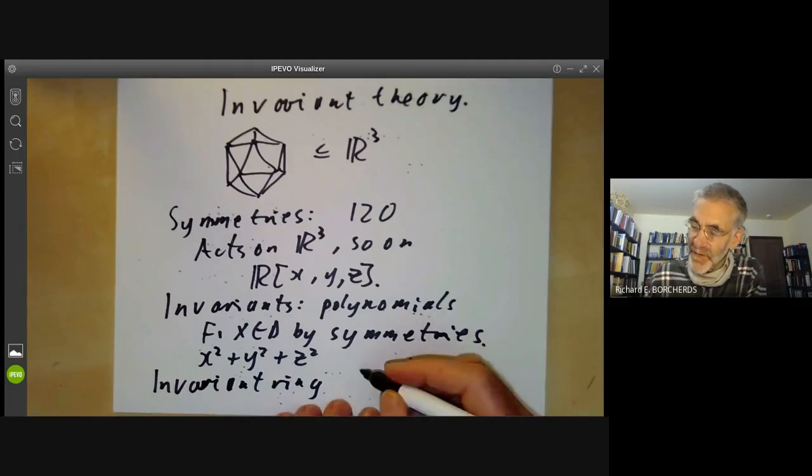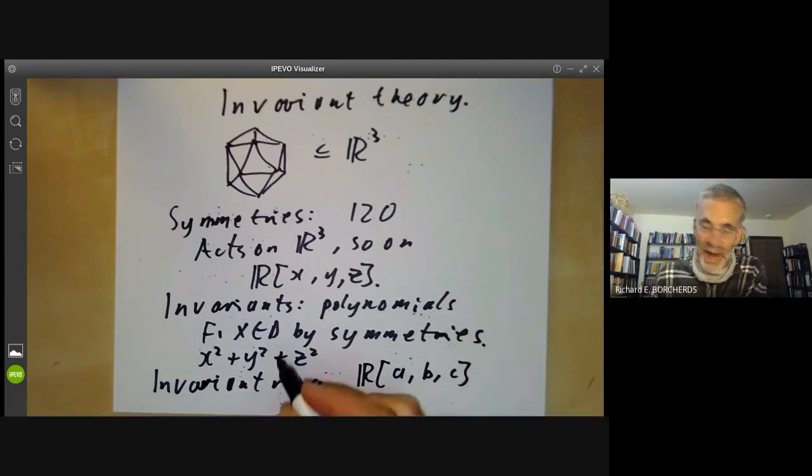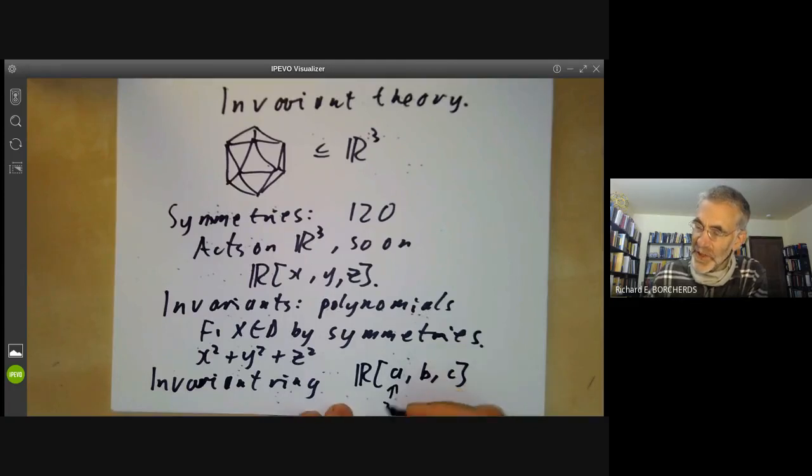You can ask, what is the structure of this ring? Klein showed that the invariant ring is a polynomial ring in three generators, A, B and C, where A has degree 2, B has degree 6, and C has degree 10.